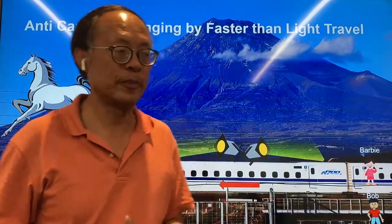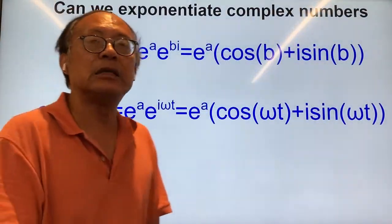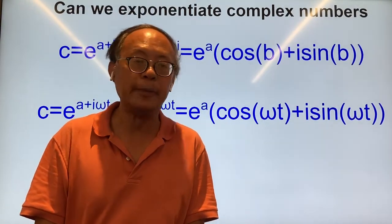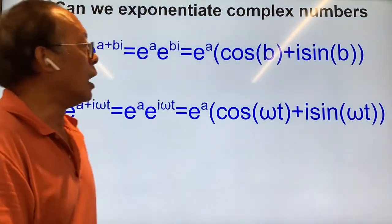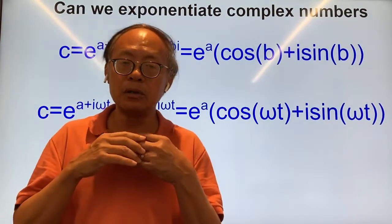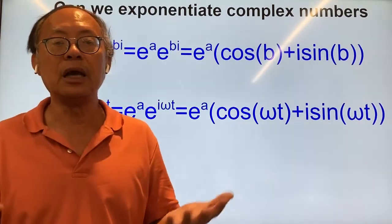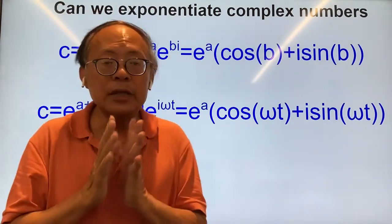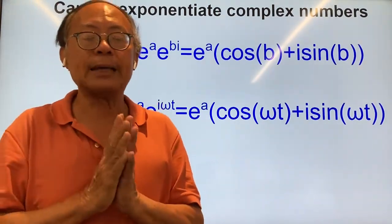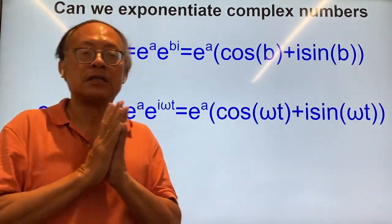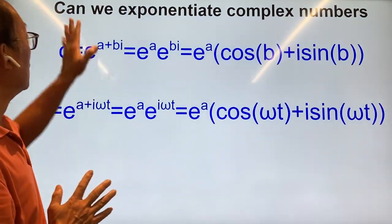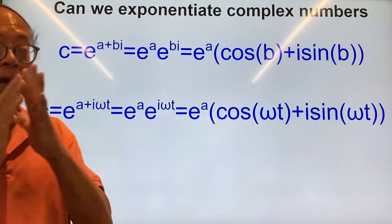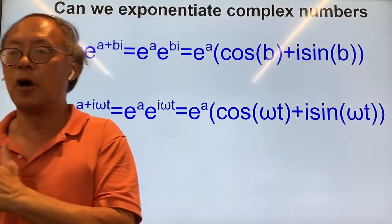I haven't yet explained that time is associated with the imaginary dimension following the same Euclidean theory about distances in four-dimensional spacetime. We would like to look at another aspect of time: can we exponentiate complex numbers? So we can calculate distance according to the Euclidean formula — now we're going to do exponentiation.